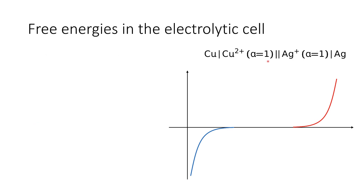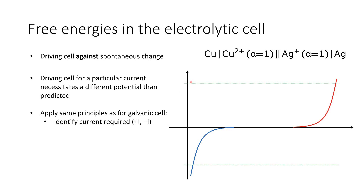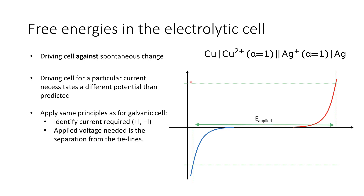We're driving the cell against spontaneous change — forcing copper to be deposited rather than being released into solution. In order to drive a cell at a particular current, we have to drive a different potential than predicted. The difference between the standard potentials would be expected to give us our cell potential, but to get a measurable current, we have to apply a much greater overpotential. We identify our anodic and cathodic components, and the applied voltage required is the same separation from the tie lines as before — we must apply a much greater potential than thermodynamics would predict.